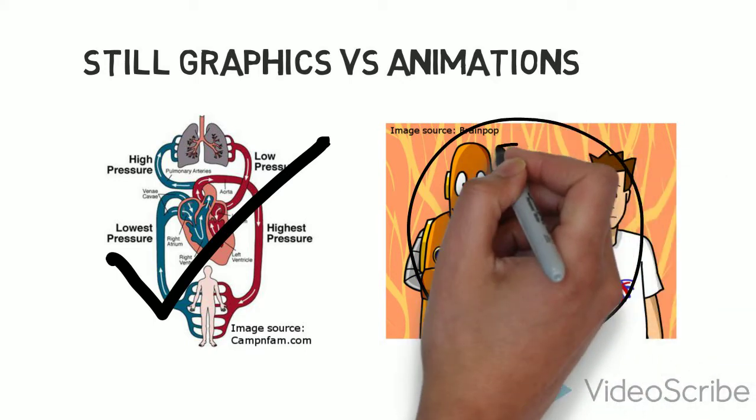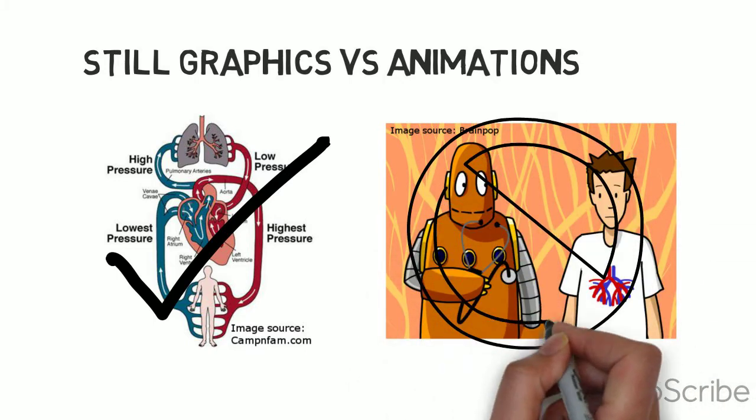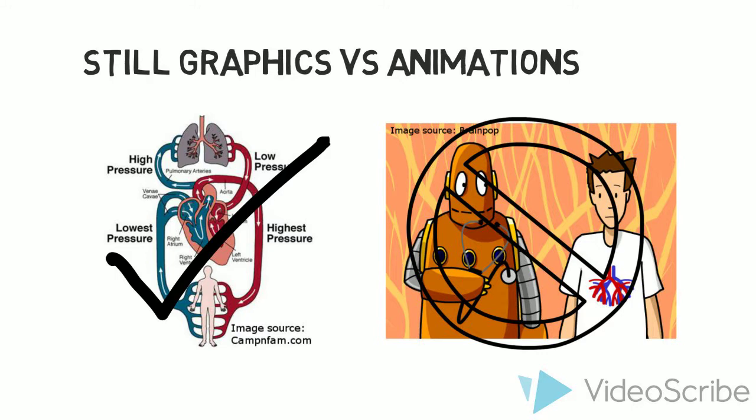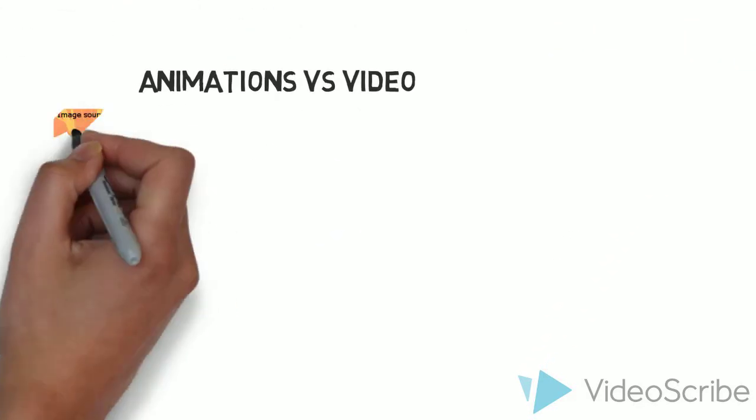However, there are a few strategies to make animations more effective. Animations are more effective when the learner is able to control the pace of the animation or presentation, and when the animation contains cueing such as arrows or color to direct the learner to relevant details.